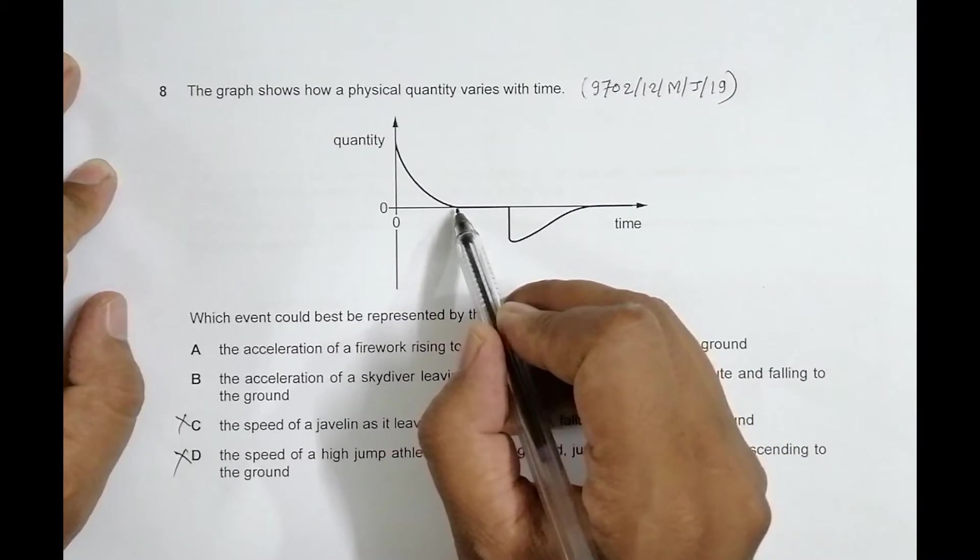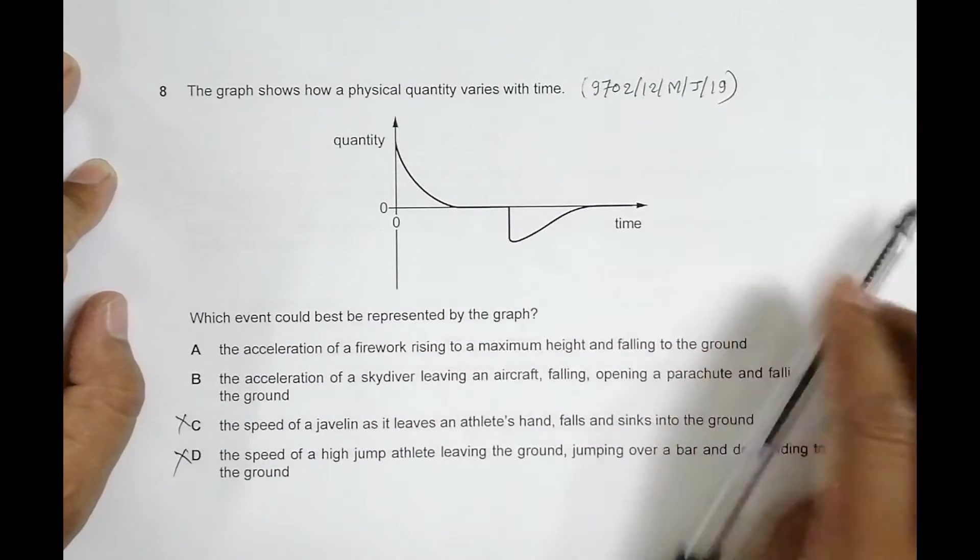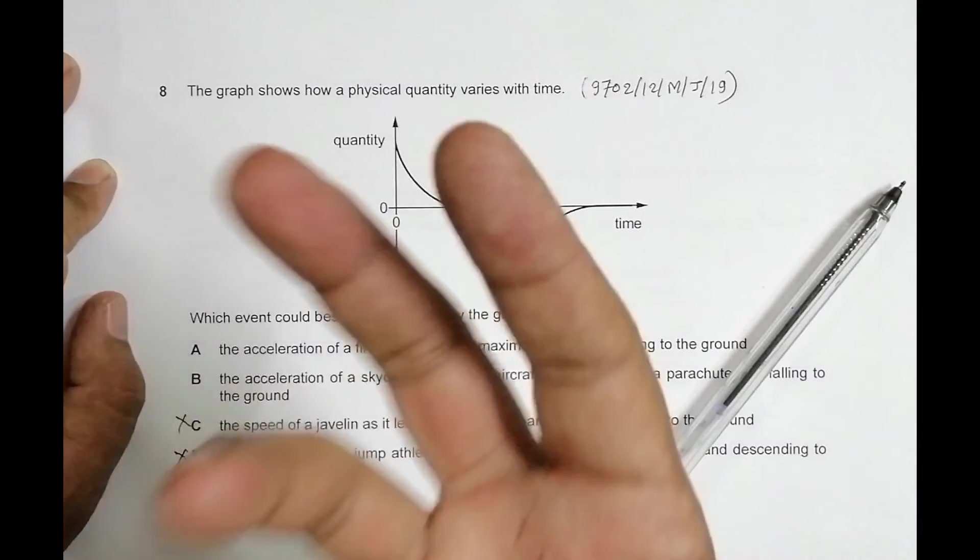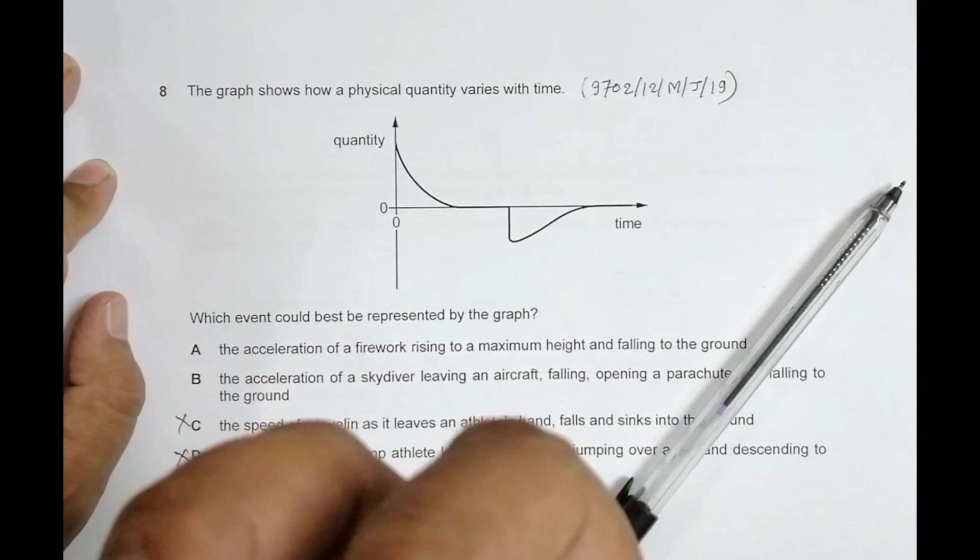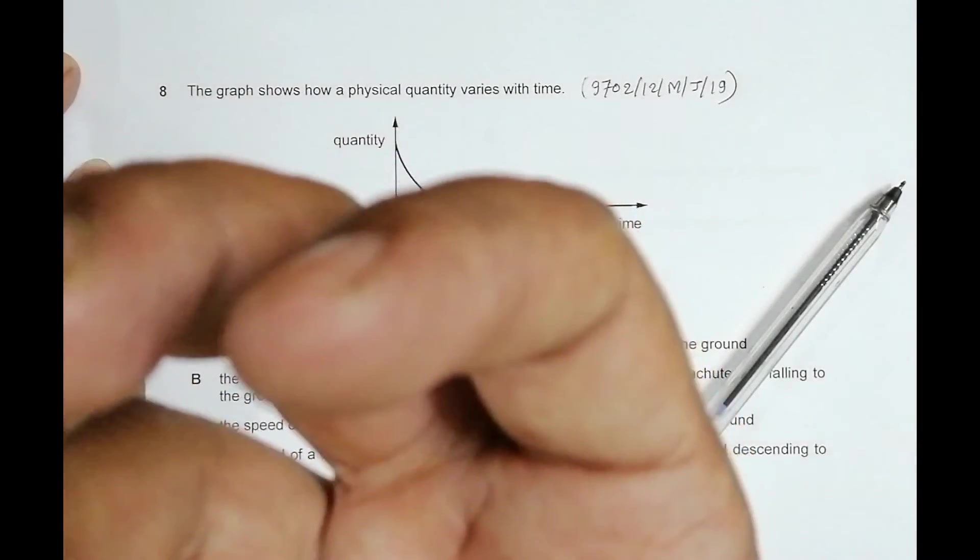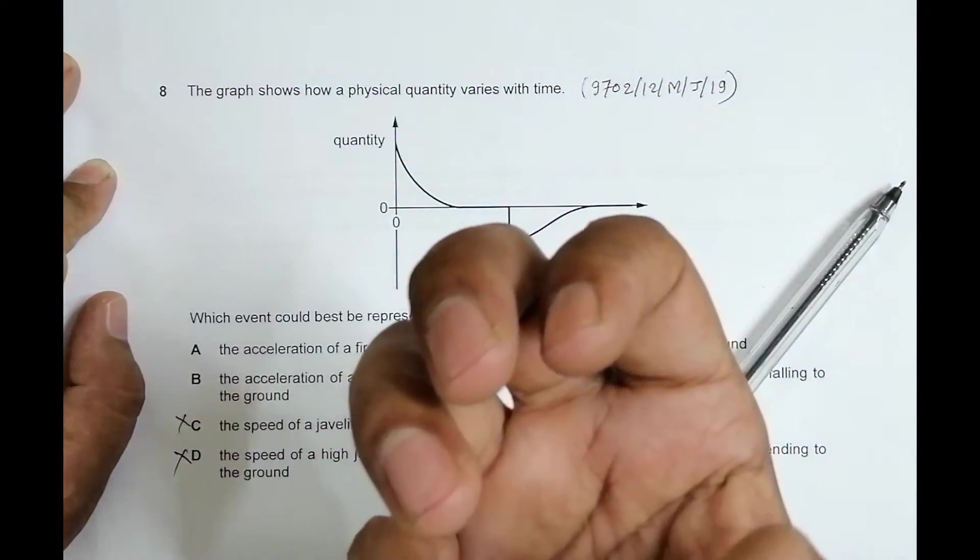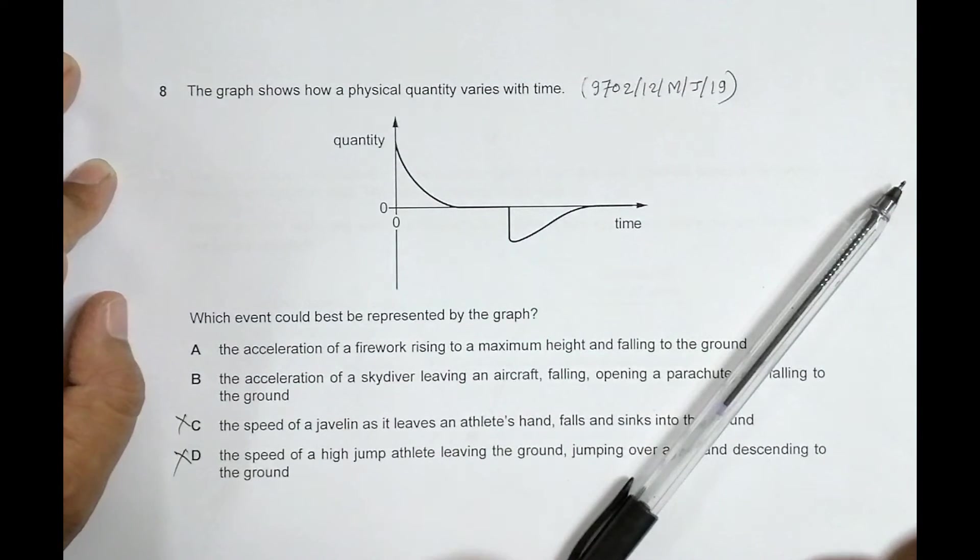It says a is zero. A is zero means the firework should be moving with a uniform speed somewhere. It's not possible because it moves up and then falls back, so the speed is zero only at a moment. The acceleration cannot be zero for a long time because a is zero means velocity constant, and velocity constant is almost impossible.